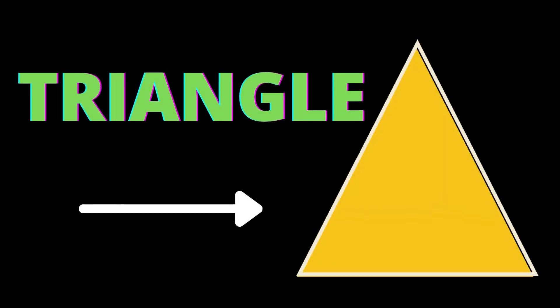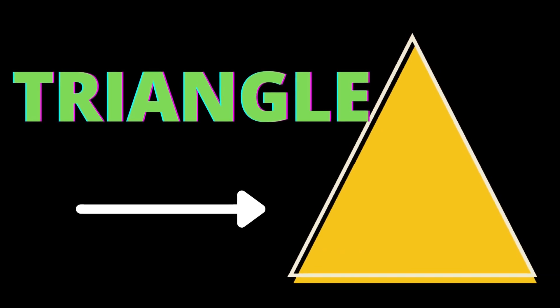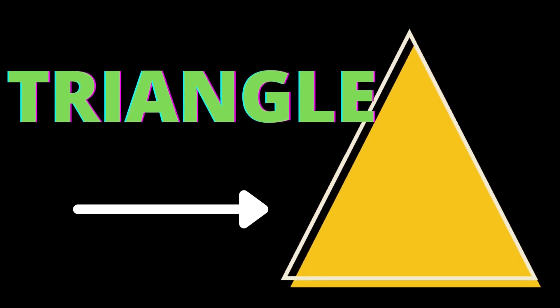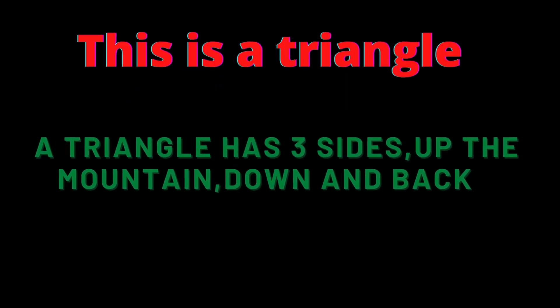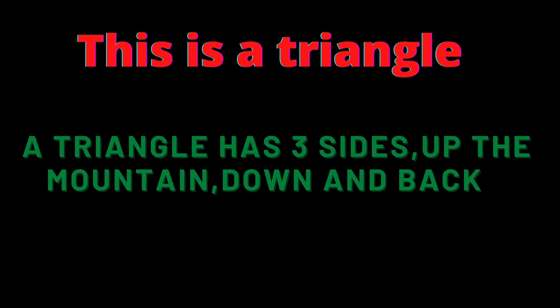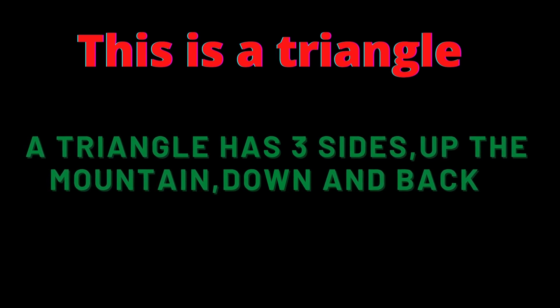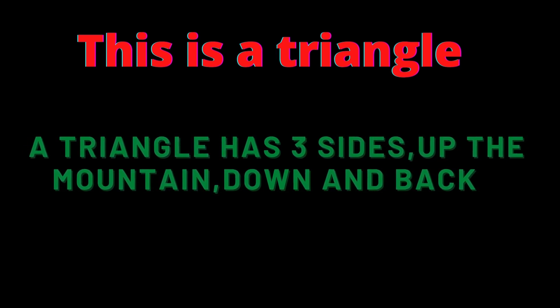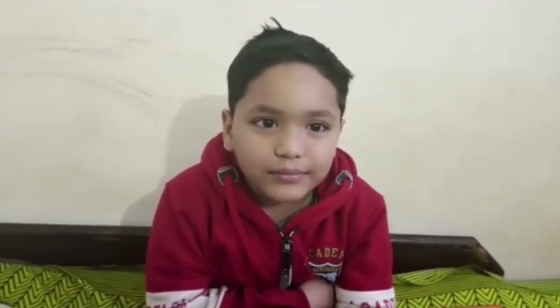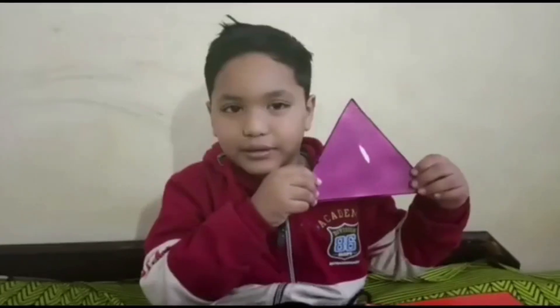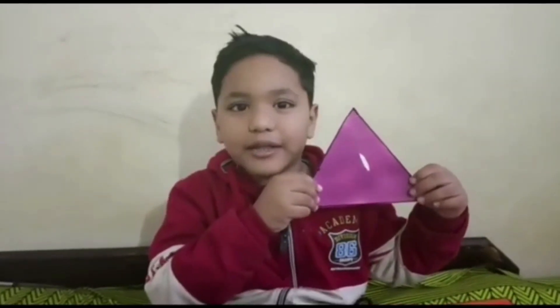T-R-I-A-N-G-L-E, triangle. This is a triangle. A triangle has three sides — up the mountain, down and back. It has three sides and three corners. What shape is that? It is a triangle.